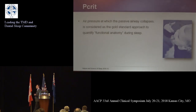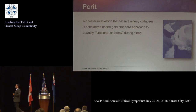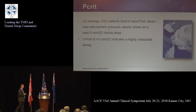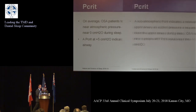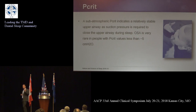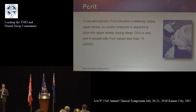We spoke about Pcrit as the air pressure at which the passive airway collapses, and it's considered the gold standard approach to quantify functional anatomy during sleep. On average, Pcrit is normally at or close to atmospheric pressure. Atmospheric Pcrit indicates a relatively stable upper airway, as suction pressure is required to close the upper airway during sleep — we need the upper airway to be able to counter that suction.